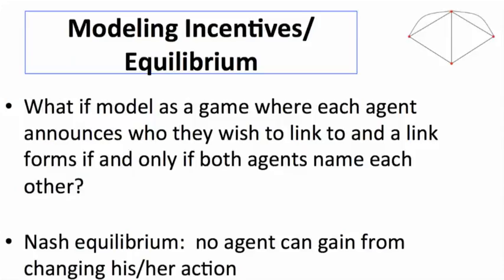Nash equilibrium would be a situation where nobody wants to change their list of announcements given the set of announcements of other individuals. Let's talk through why that doesn't really work so well as a model of network formation in these kinds of settings.